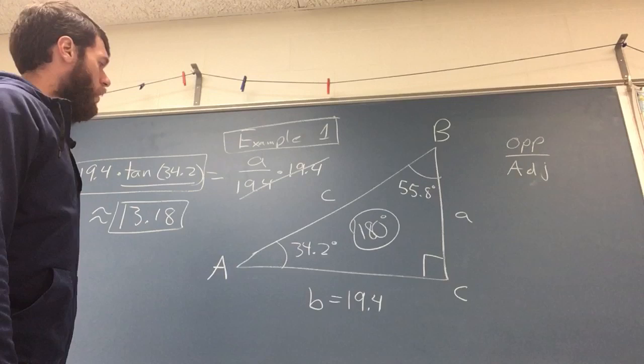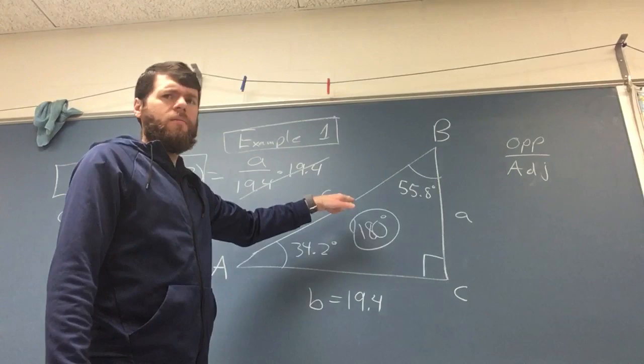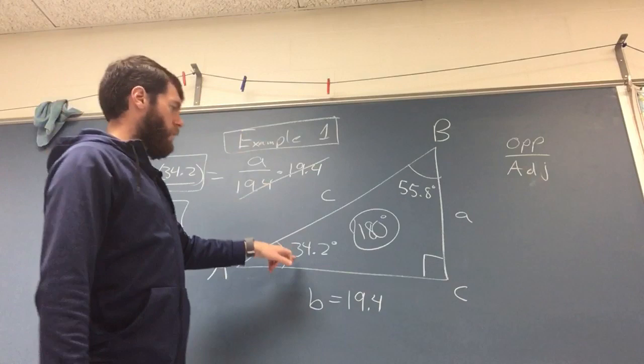And then how to find C? Well, I mean technically now that you have B and A you can use Pythagorean theorem and find C, but you don't even need to do that. You can use trig functions again. Look, relative to, you want to do relative to this angle or this angle, it doesn't matter. Let's use this one just because it's different.